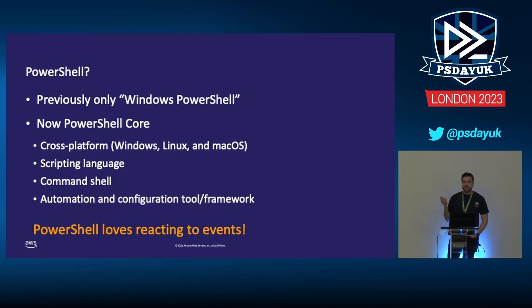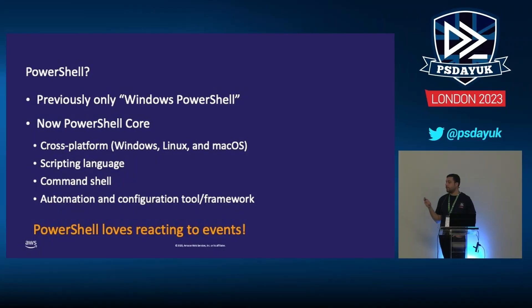Simply put, it's an open-source shell based on .NET technology that's meant to help you create automation scripts and tool configurations. PowerShell loves reacting to events — one of the very common use cases is to schedule a task and run PowerShell scripts to take a certain action at a given time. That's why having PowerShell together with Lambda would actually be a perfect match, because that's what Lambda is built for.